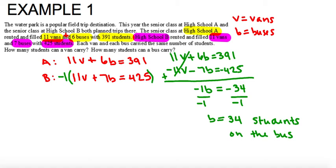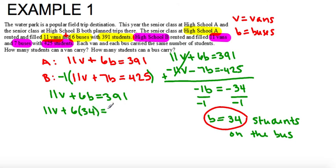So to figure that part out I can plug in the B, the 34, into either one of these two original equations. So I'm going to plug it into the top. So I have 11V plus 6B equals 391. So 11V plus 6 times 34 equals 391.